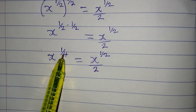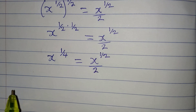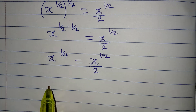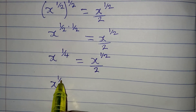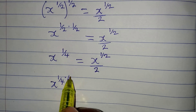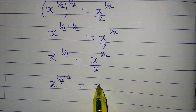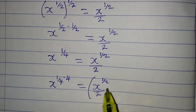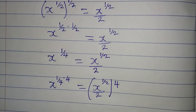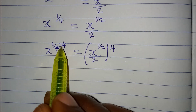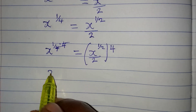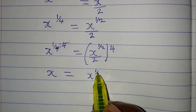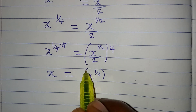The next step is to remove the power of 1 over 4, and we can do that by multiplying the power by 4. So we have x to the power of 1 over 4, multiplied by 4, equal to x to the power of 1 over 2 over 2, the whole of this multiplied by 4. The 4 cancels with the 1 over 4, so x is free and equal to x to the power of 1 over 2 to the power of 4, all over 2 to the power of 4.